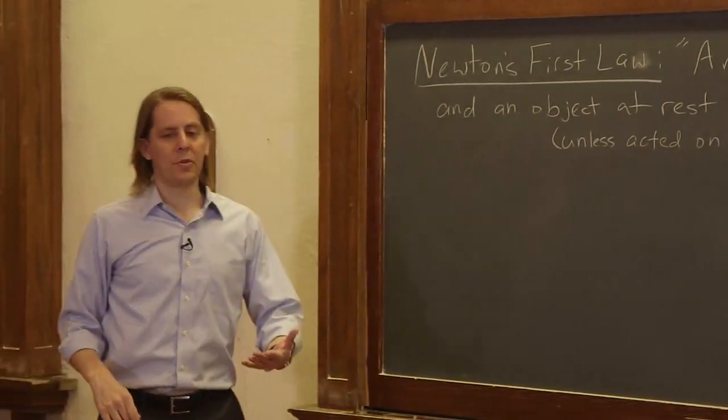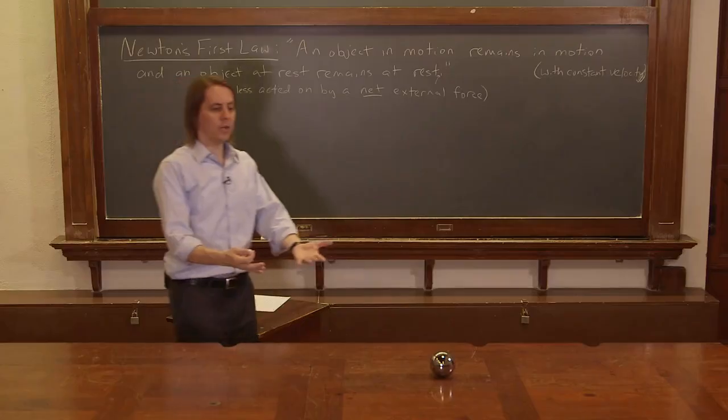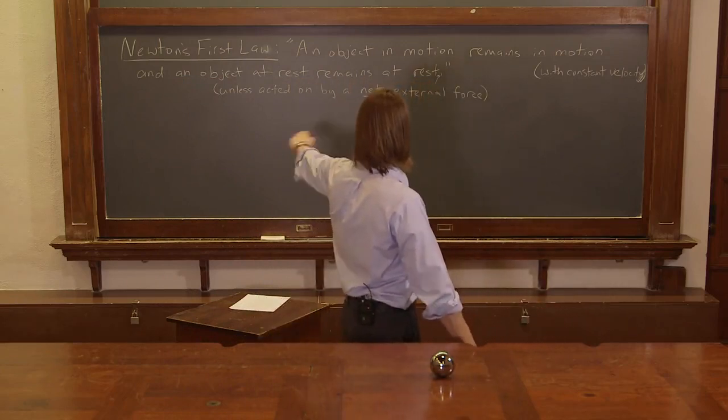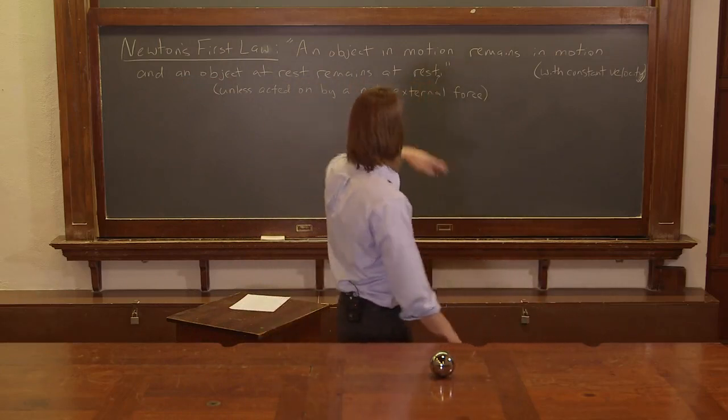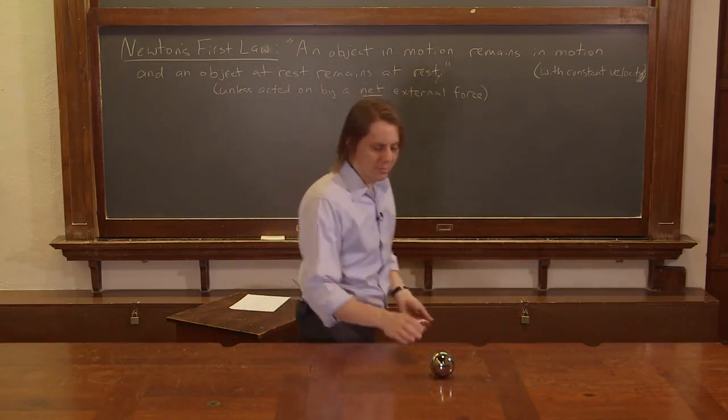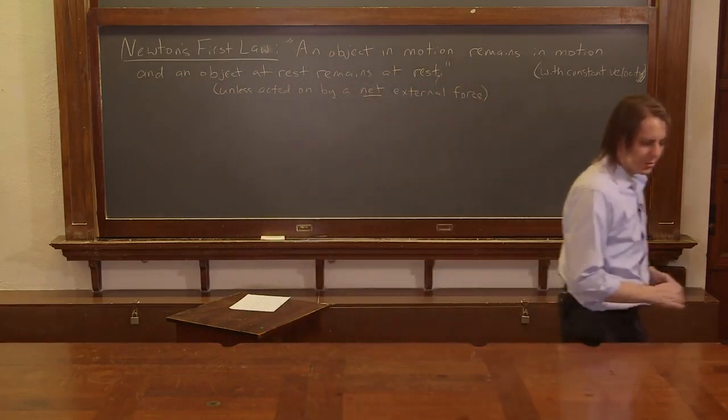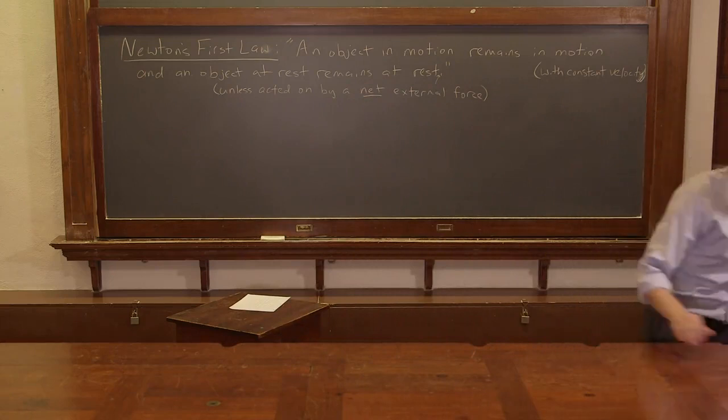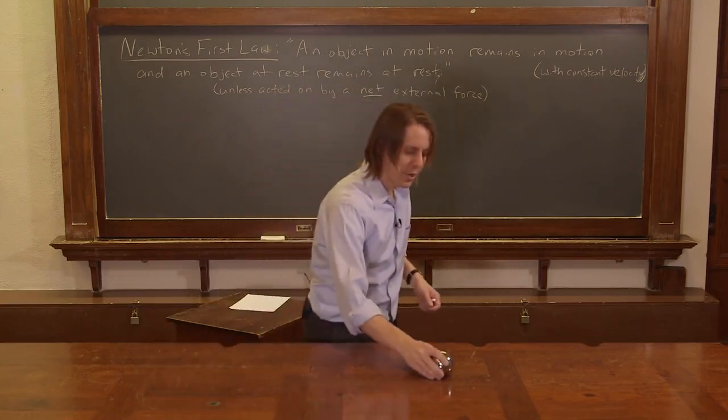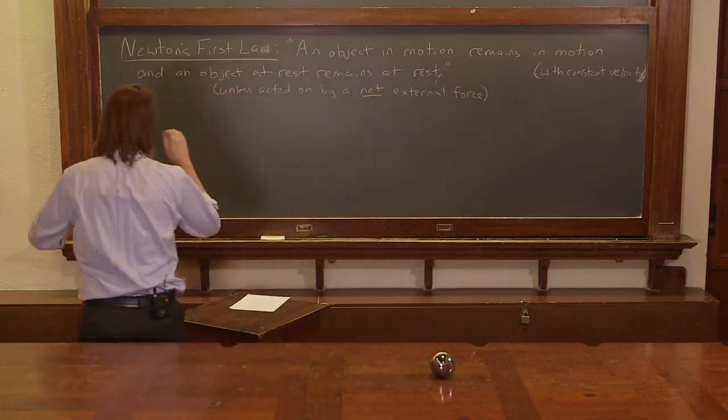So you can get Newton's first law, or you can see it just by looking at Hal here. Hal's sitting here, and he is at rest and he remains at rest. So nothing happens, right? And if Hal's in motion, he remains in motion, unless I stop him. So my hand is the external force that is changing his state of motion. So that one is easy to confirm.